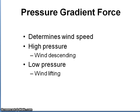Pressure gradient force determines the speed of the wind. In high pressure cells, wind is descending, sinking down toward the Earth's surface. In a low pressure cell, wind is moving up. And that juxtaposition between wind moving up and wind moving down creates movement across the Earth's surface.